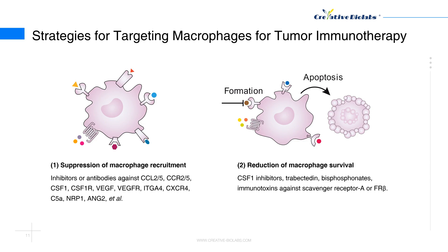2. Reduction of macrophage survival: As CSF1 is a crucial signal for the differentiation of macrophages, CSF1 inhibitors restrain the formation of macrophages. Trabectedine could also be used to reduce the survival of macrophages by inducing apoptosis. Immunotoxins targeting scavenger receptor A or folate receptor beta can deplete tumor-associated macrophages, and bisphosphonates are metabolic analogs that reduce macrophages.